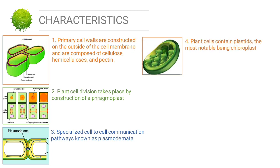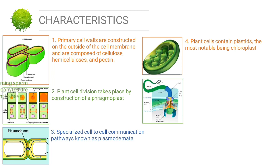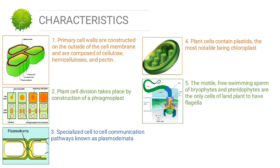The next characteristic: plant cells contain plastids, the most notable being chloroplasts — specialized structures which contain the green-colored pigment chlorophyll. Chlorophyll absorbs sunlight and allows the plant to make its own food in the process known as photosynthesis.